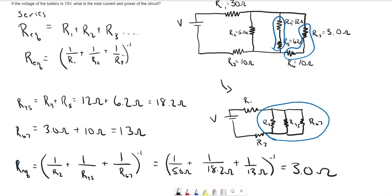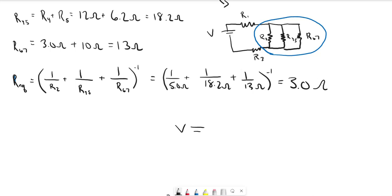So now what we have is just a circuit with three resistances that are in series and we can just add these together. So that's R1, R, I guess we'll call this 2,4,5,6,7, and R3.